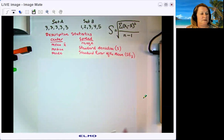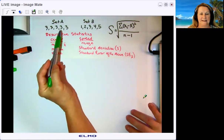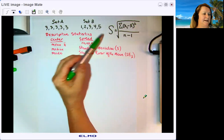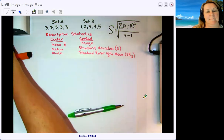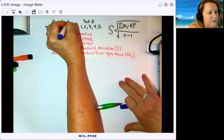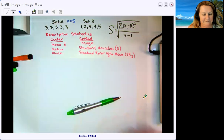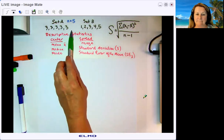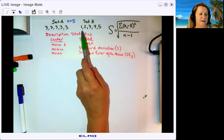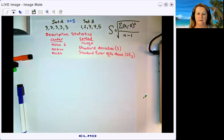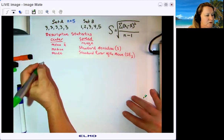Let's get started with two sample data sets. Data set A has five members, and data set B has five members, so N for both data sets is five. In data set A, all five members are the number three. In data set B, we have the numbers one, two, three, four, five. Let's figure out the mean, median, and mode for each one.